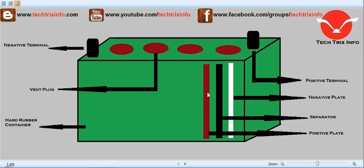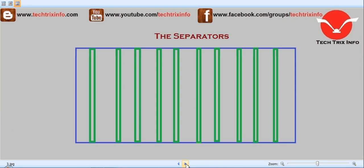and red is the positive plate, and we have a separator in between. It actually separates the positive from the negative plate. They are made of microporous rubber, non-conducting ebonite, etc.